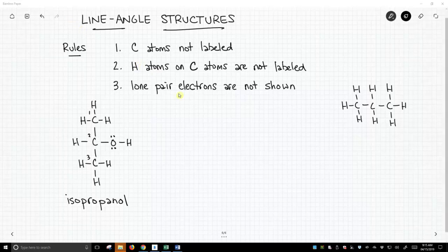On the screen we have our rules for line angle notation. Rule number one is we don't label our carbon atoms. We can assume if an atom is unlabeled that it's a carbon atom.